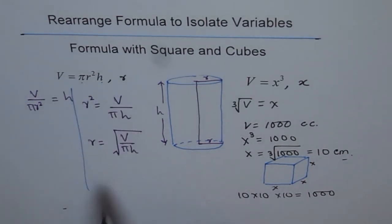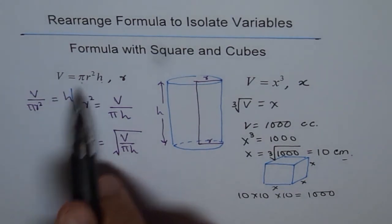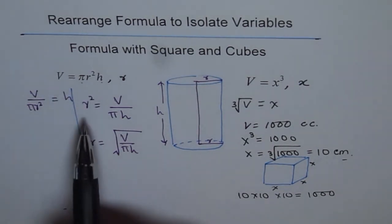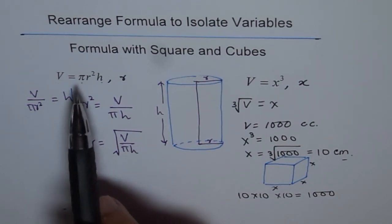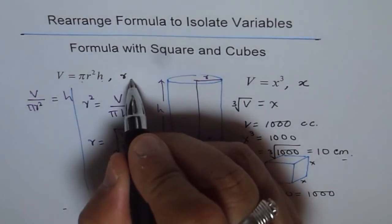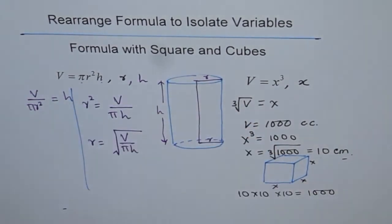So that is how you can rearrange this formula. So I have just given you hints here. I would like you to copy these formulas and then follow steps to isolate the variables. So first isolate r and then isolate h. That is your practice problem.